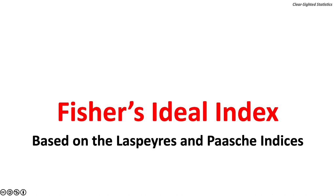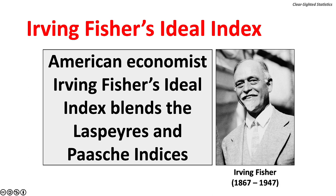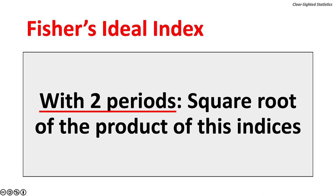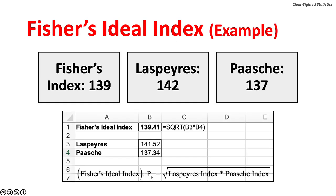Fisher's Ideal Index is based on the Laspeyres and Paasche Indices. American economist Irving Fisher developed this Ideal Index, which blends the two. Fisher's Ideal Index is the geometric mean of the product of the Laspeyres and Paasche Indices. With two periods, it is the square root of the product of these indices. For our example, with a Laspeyres Index of 142 and a Paasche Index of 137, Fisher's Ideal Index is 139.